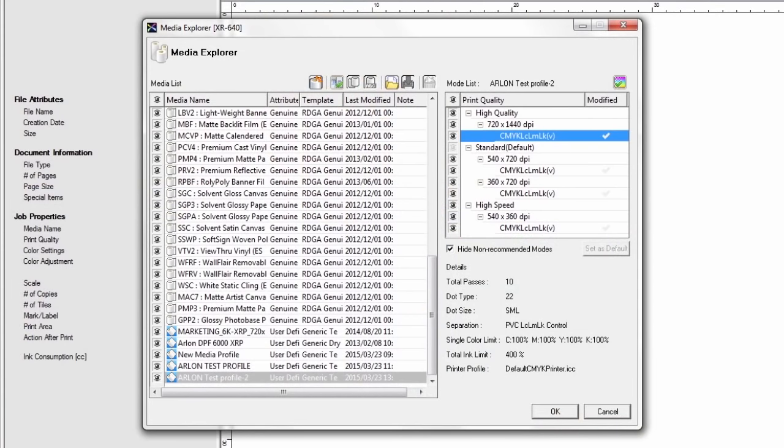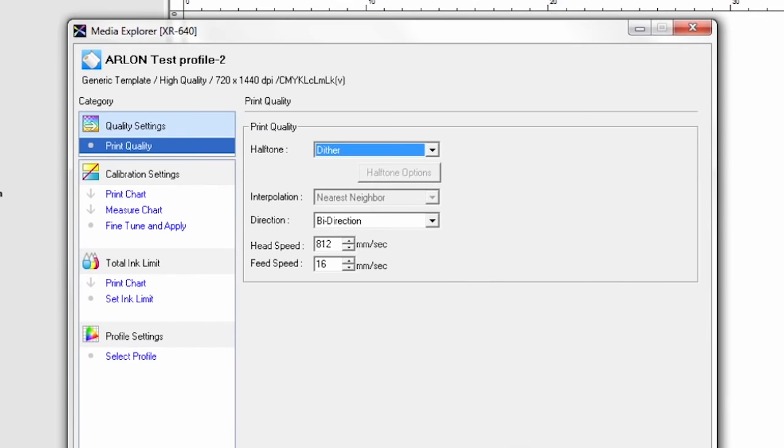We will select the 720 by 1440 10 pass print mode. Set your printer parameters and click OK to exit the window. From the print quality settings, select the desired halftone, print direction, head or carriage speed, and feed speed.